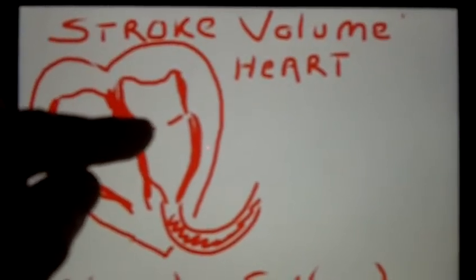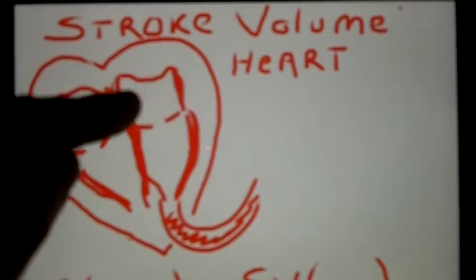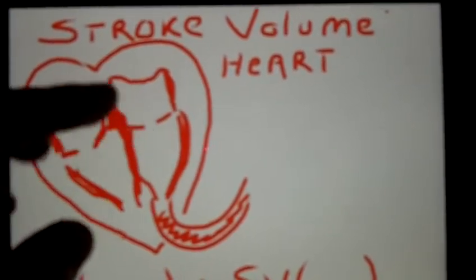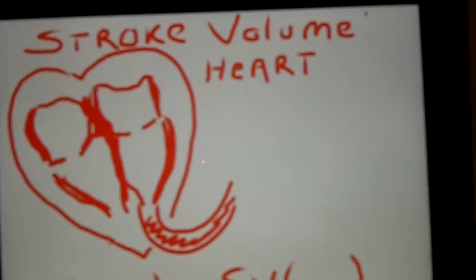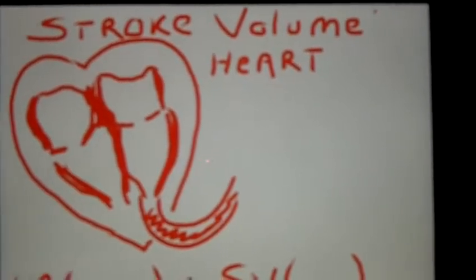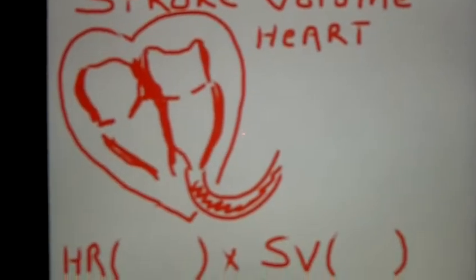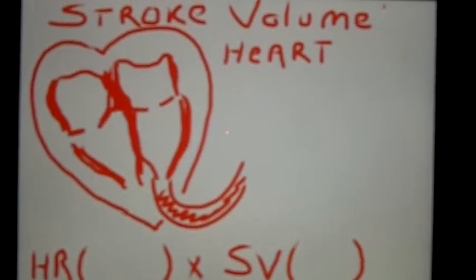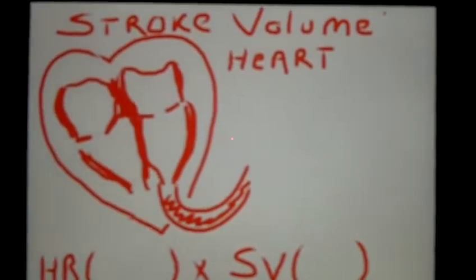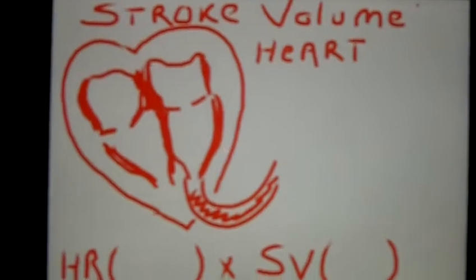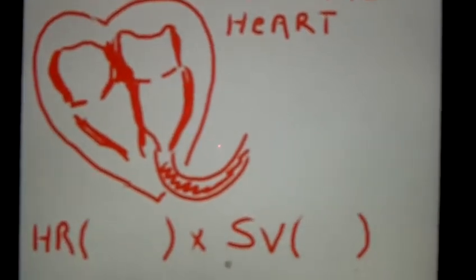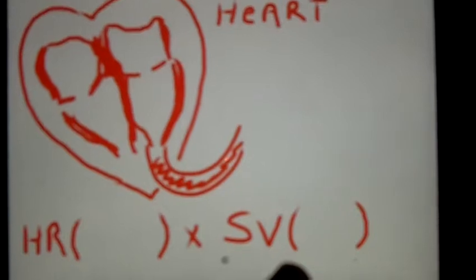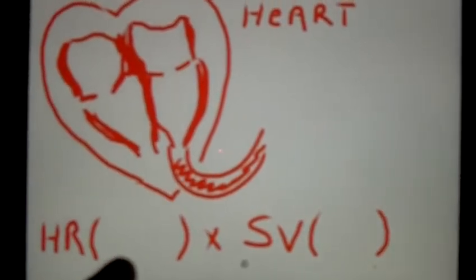An elevated bottom number represents an issue with atrial filling. Any deviation from normal — a cardiologist will look at that and know exactly what's going on. So a little FYI. But anyway, back to cardiac output. Cardiac output is the multiplication of two variables: one, heart rate; two, stroke volume.